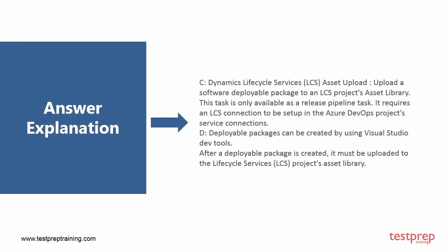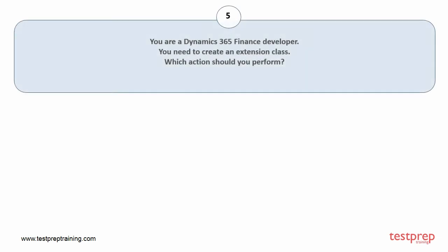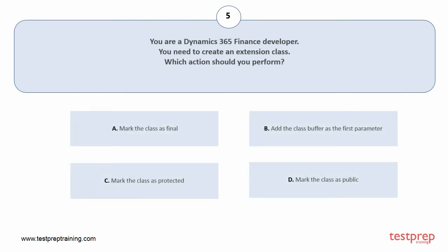Here is the explanation of the answer. Question number 5. You are a Dynamics 365 Finance developer. You need to create an extension class. Which action should you perform? Your options are: A. Mark the class as final. B. Add the class buffer as the first parameter. C. Mark the class as protected. D. Mark the class as public. The correct answer is option A.